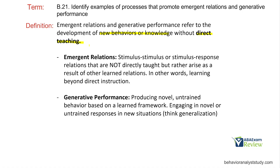Emergent relations are those stimulus-stimulus or stimulus-response relations that are not directly taught, but arise as a result of other learned relations — relationships that form beyond direct instruction. The most common idea: if I teach you A equals B, I don't have to teach B equals A; hopefully that relationship emerges. Generative performance — think generalization. We have novel, untrained behaviors based on a learned framework, and now novel or untrained responses in those situations are occurring.